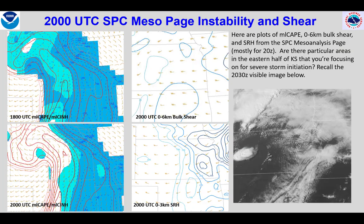Just from these 20Z images from the SPC mesoanalysis page focused on instability and shear, I'm focusing on north central Kansas, where significant destabilization and cap reduction has occurred since 18Z. I also have boundaries with some convergence along them. While visible satellite doesn't show much cumulus development yet, I expect that to change during the next hour or two, and we can see hints of it at 2030Z. Note there is some elevated convection behind the surface trough that is not severe.